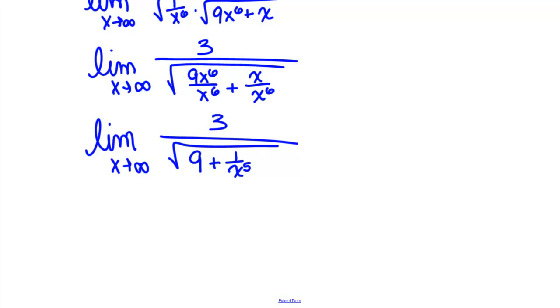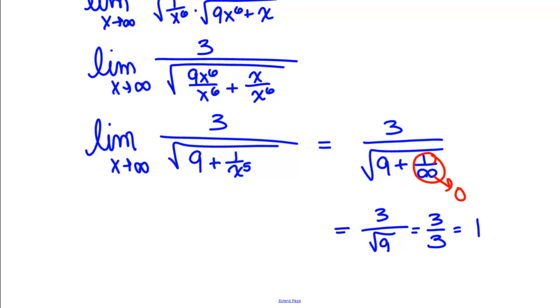Now using our limit laws, we can see that this is going to have the form 3 over the square root of 9 plus 1 over infinity. And we know 1 over infinity goes to 0. So this is just 3 over the square root of 9, or 3 thirds, or 1.